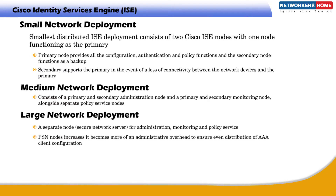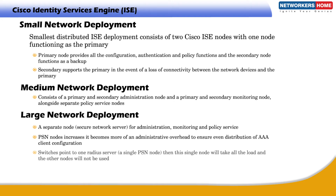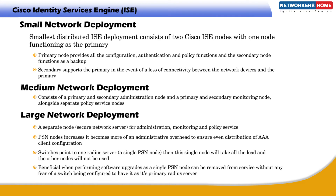As the number of PSN nodes increases, it becomes more of an administrative overhead to ensure even distribution of AAA client configuration. For example, if you have 1000 switches, each will be configured to point to a specific primary and secondary RADIUS server. If all switches point to one PSN node, that single node takes all the load. Putting a load balancer in front of the PSNs and creating a RADIUS VIP ensures all switches can be configured with a single RADIUS server, and the load balancer will balance requests between all PSNs. This is also very beneficial when performing software upgrades, as a single PSN node can be removed from service without any switch being impacted.